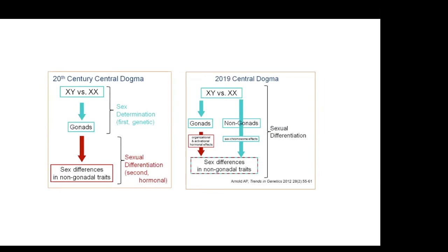The problem is that there are sex differences in the liver and in almost any cell type in the body even before the gonads develop, and they don't have anything to do with gonadal hormones. They're caused by inherent differences between XX and XY genomes in those cells. So in non-gonadal cells, there's also an inherent genomic difference: the expression of X genes and Y genes differs between males and females. These are called sex chromosome effects, and they have effects throughout the body. So both factors — hormones and sex chromosome effects — are happening at the same time; they can oppose each other or be synergistic.